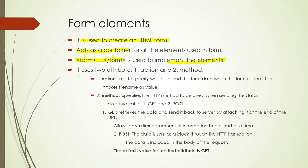This is a very important topic. The form uses two attributes: the first is the action attribute and the second is the method attribute. The action attribute tells us where the data in the form will go when we submit the form — what is the next level — that is specified by action. The method attribute takes two values: GET and POST, and it specifies which HTTP method will be used for sending the data.